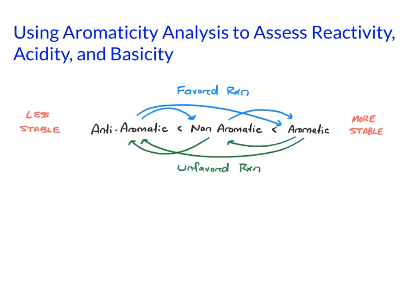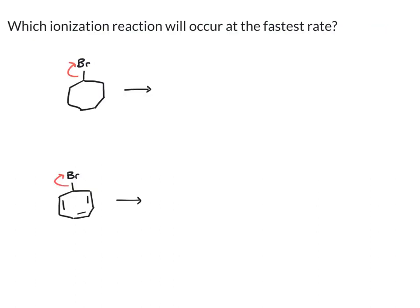So keeping this in mind, we're going to look at some examples. In this first example, we're comparing two ionization reactions and figuring out which one will happen at the fastest rate. This is something you learned about with SN1, that was an ionization where we lose the leaving group. So if we draw the products, here we get a seven-membered ring with the carbocation, plus the bromide anion.